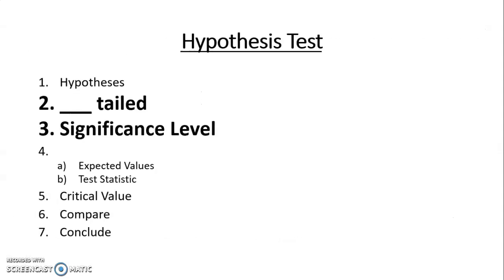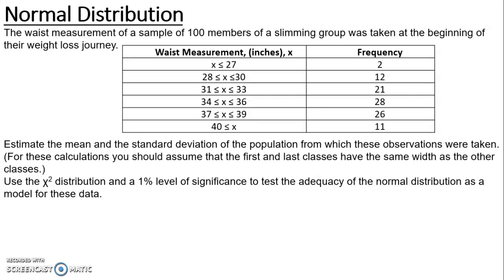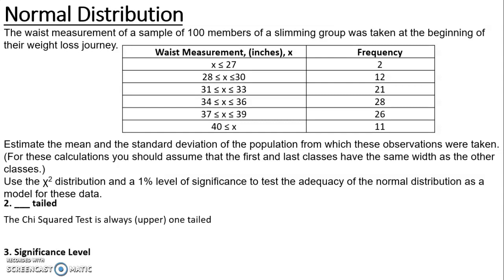Next we need to look at the tail and the significance level. These don't necessarily give us marks but they help us later on in the question. A chi-squared test is always one-tailed and we always look at the upper value. For this question we have been asked to use a 1% level of significance.